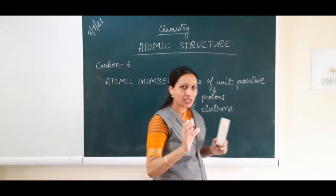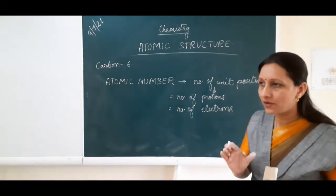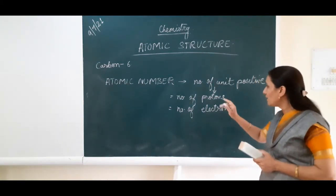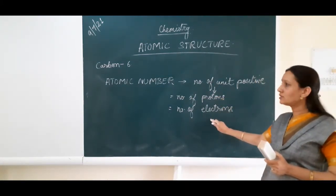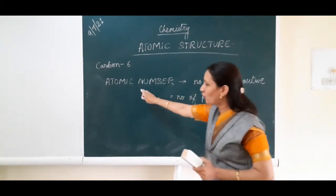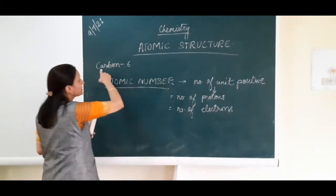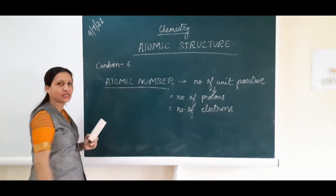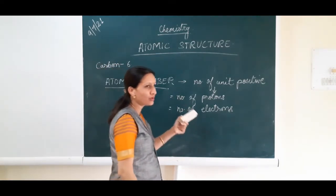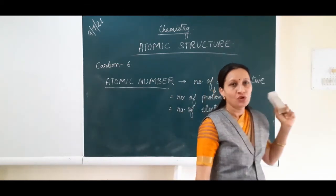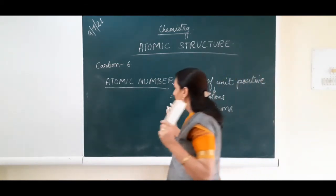That means atomic number is the number of protons, or it can also be the number of electrons — because both are equal. For a stable atom, for the atom to be electrically neutral, the number of protons should be equal to the number of electrons. So if the atomic number of carbon is 6, it has 6 protons and 6 electrons.